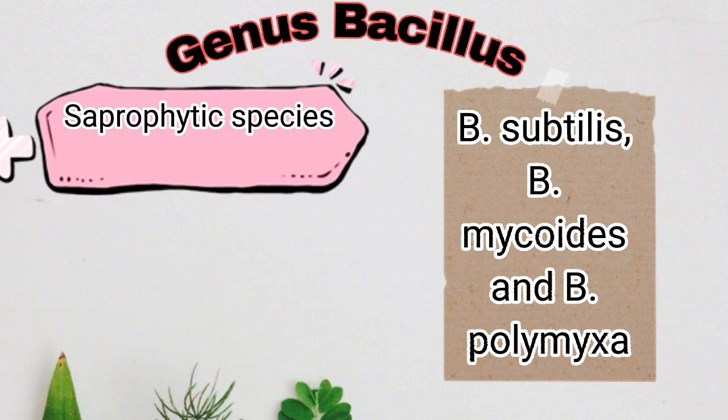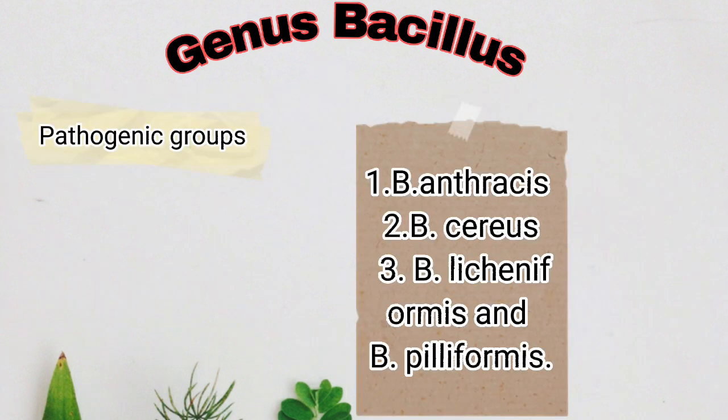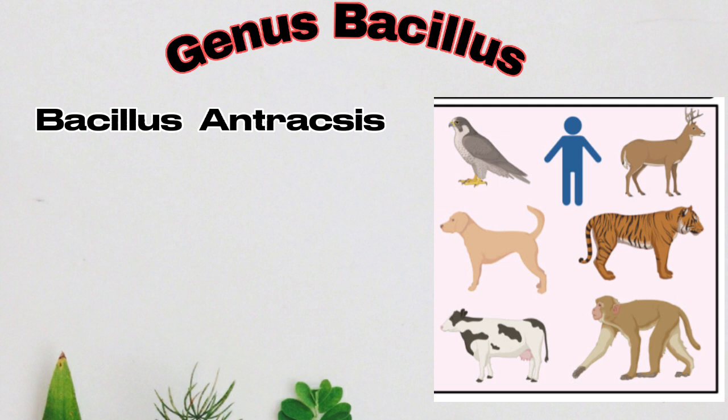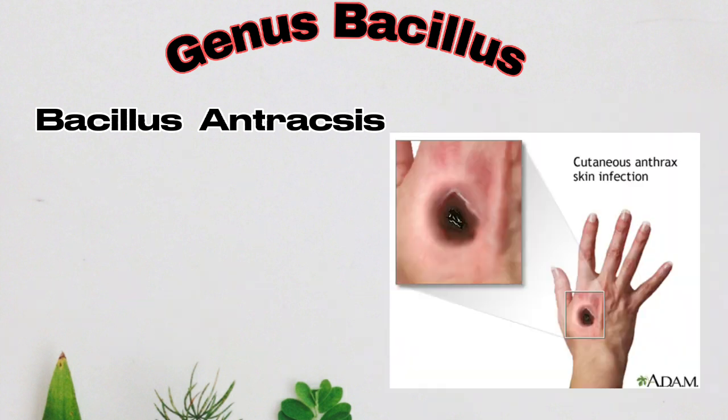Most of them are saprophytic and non-pathogenic, widely distributed in air, soil, and water. Saprophytic species are the major contaminators in the laboratory; examples are Bacillus subtilis, Bacillus mycoides, and Bacillus polymyxa. The pathogenic group of veterinary importance includes Bacillus anthracis, Bacillus cereus, Bacillus licheniformis, and Bacillus puliformis. Bacillus anthracis causes anthrax in all warm-blooded animals except birds.